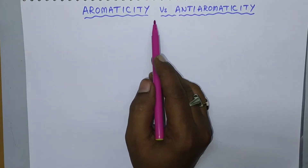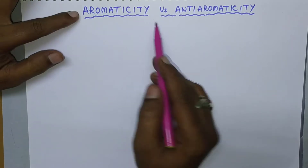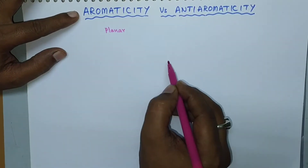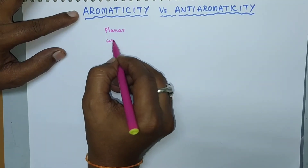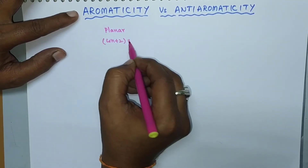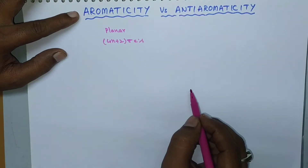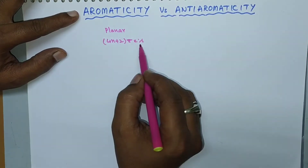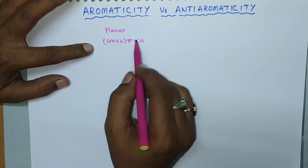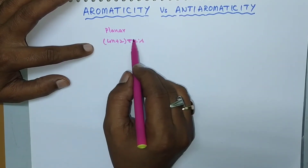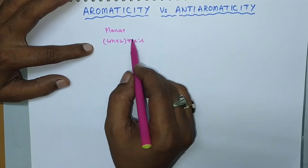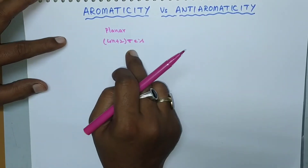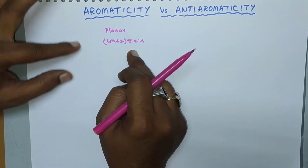Aromaticity means the compound must be a planar molecule, and it should consist of 4n+2 π electrons — that is, it should satisfy Hückel's rule. These 4n+2 π electrons are always delocalizing and exhibit some resonance structures, and these compounds undergo substitution reactions rather than addition reactions.